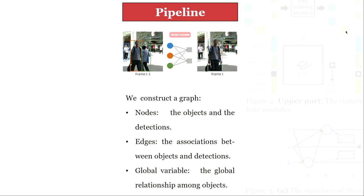Specifically, the global variable in the graph network is expected to capture the global relationship among objects to help tracking.